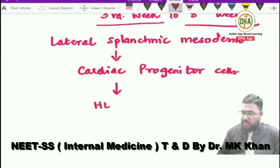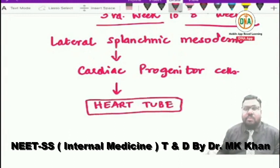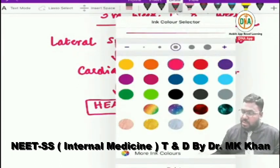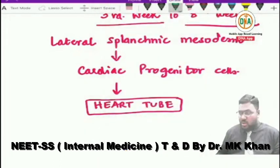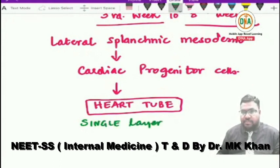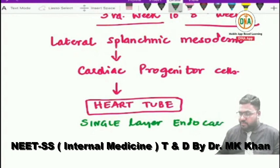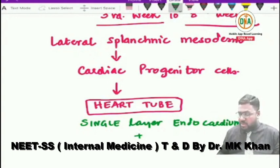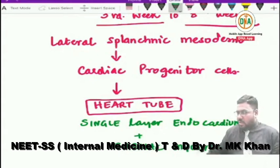The heart tube is composed of a single layer of endocardial cells along with a single layer of cardiac myocytes.